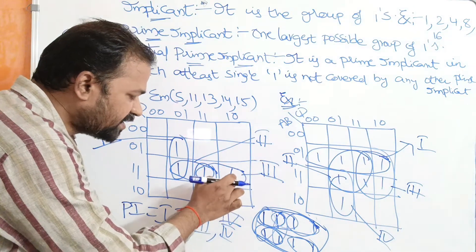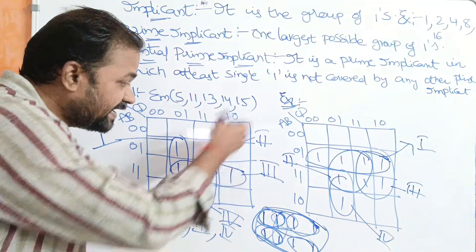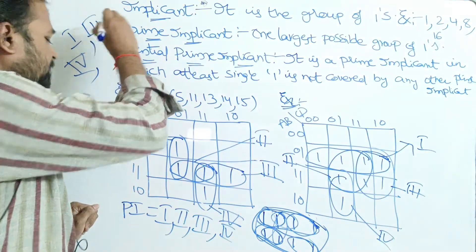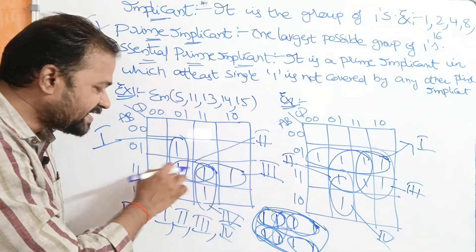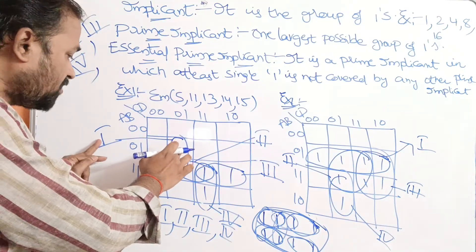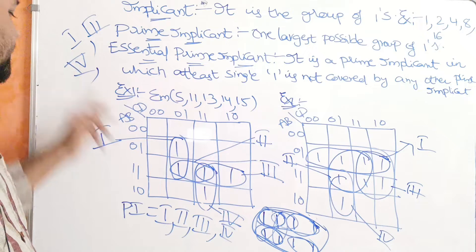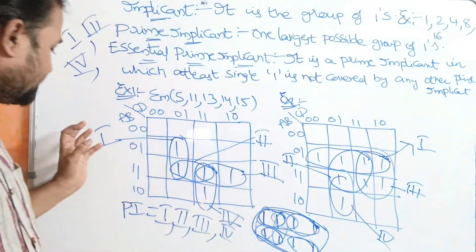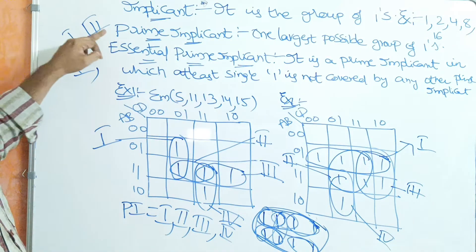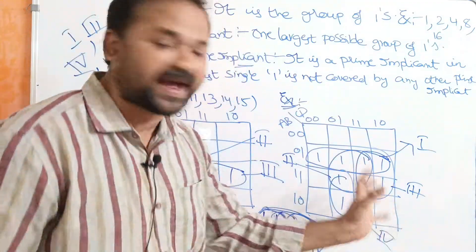If we observe the third group, the one in the third group is also not covered by any other Prime Implicant, so the third one is also an Essential Prime Implicant. What about the second one? In the second group we have two ones, but this one is covered by Prime Implicant one, and this one is covered by Prime Implicants three and four. So here we have four Prime Implicants — one, two, three, four — but only three Essential Prime Implicants: one, three, and four.